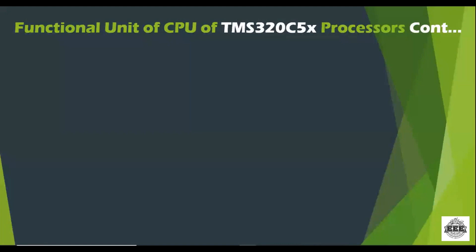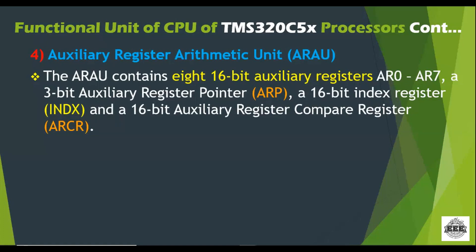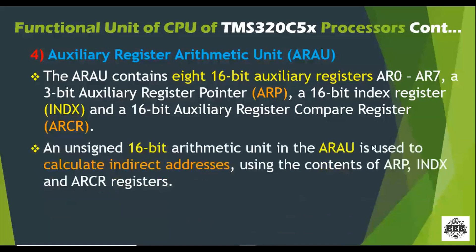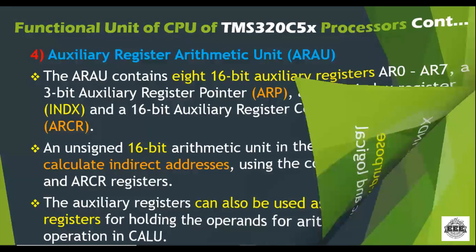The next functional unit is the auxiliary register arithmetic unit, ARAU. This unit has 8 sixteen-bit auxiliary registers from AR0 to AR7. The 16-bit arithmetic unit is used to calculate indirect addresses, which is a very important feature. These auxiliary registers can also be used as general purpose registers for holding operands of arithmetic and logical operations.